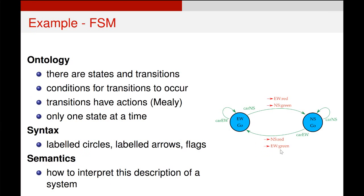So an example that we've already seen is a finite state machine which you can see on the right hand side. The ontology of that would be that there are states and we have transitions between those states.